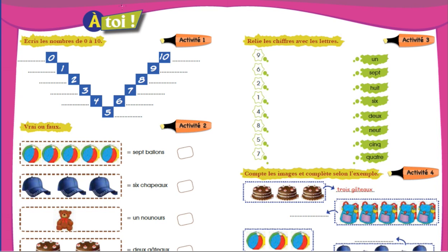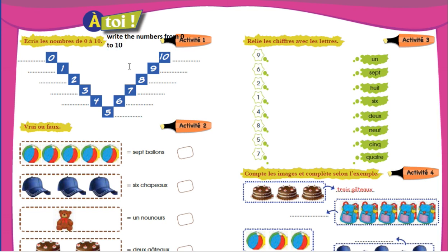So now we have some activities. Now you can see Activity A. It means write the numbers from 0 to 10. Numbers are given and we will write the spelling.